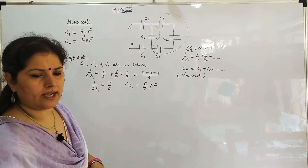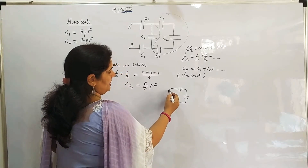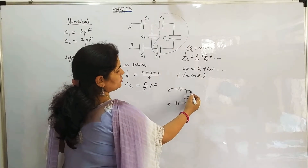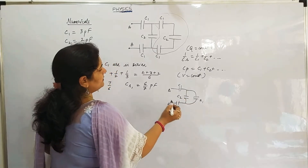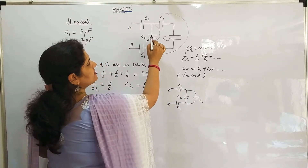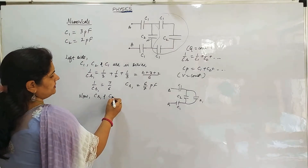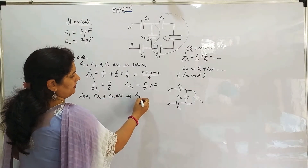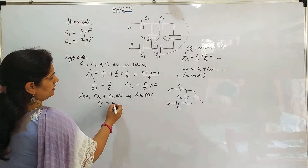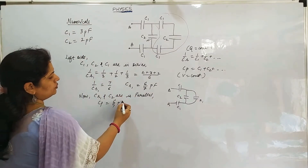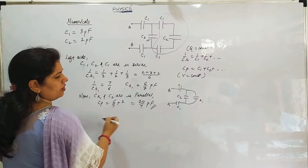Now the circuit looks like this. This is A, this is B. The back part we have solved. Now the circuit looks like this — this is answer 1 (Cs1), this is C1, this is C2, this is again C1. So Cs1 and C2 will now be in parallel. Cs1 and C2 are in parallel, so Cp = 6/7 + C2. C2 is 2, so it comes out to be 20/7 picofarad. This is your second answer.